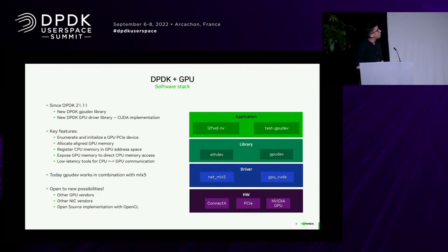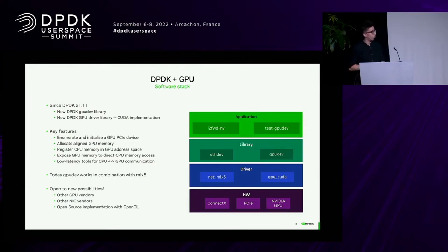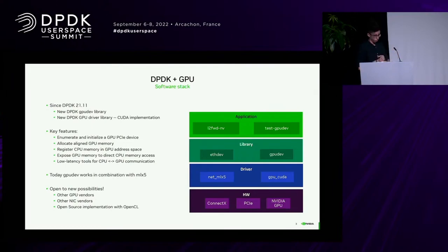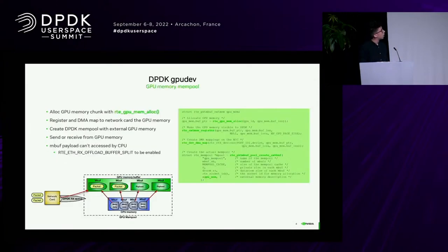In order to test this overall thing, there is the test GPU dev application that you can find in DPDK. But outside of DPDK, in another public GitHub repo, you will find the L2Forward GPU application — basically the vanilla DPDK L2Forward application empowered with the GPU. So the swap of the MAC addresses that the CPU usually does in L2Forward is now done by the GPU, just to demonstrate what you can do with this library.